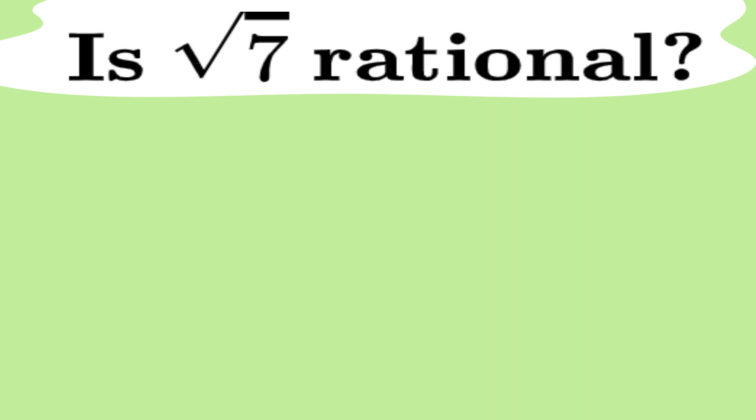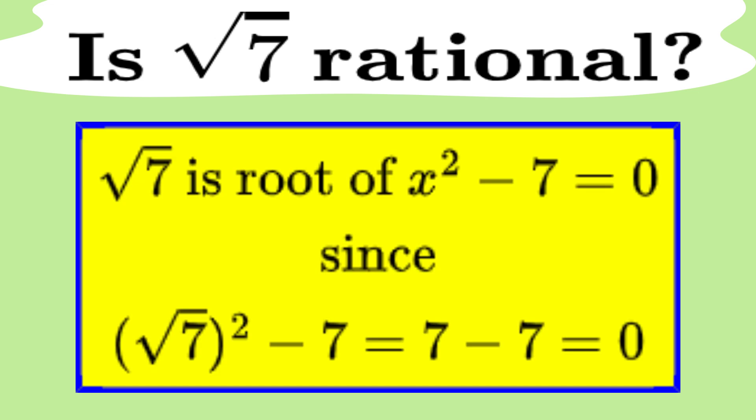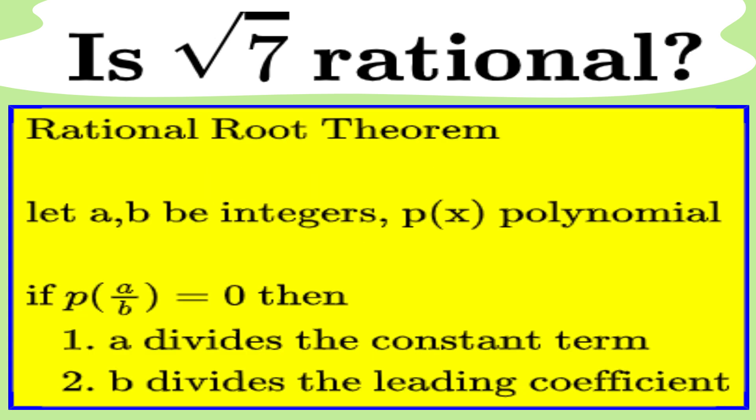Alright, for the overachievers in the room, don't worry, I see you. We're going to take this up a notch and try a different angle. So, let's pretend for a moment that the square root of 7 is rational. If that were the case, then it would be a root of the equation x squared minus 7 equals 0. Now, here's where the fun begins. Enter the rational root theorem.